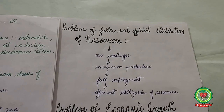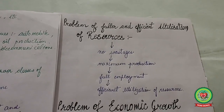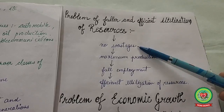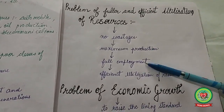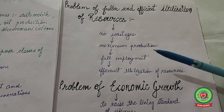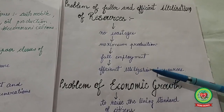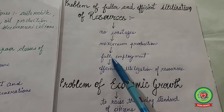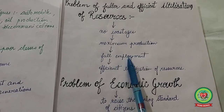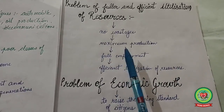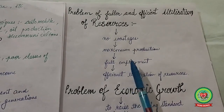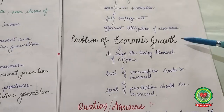The next central problem is fuller and efficient utilization of resources. Resources should be used according to demand with no wastage, leading to maximum production and full employment. Employees should work according to their ability and capacity for efficient utilization. The problem arises from unemployment or underemployment — full employment leads to fuller use of resources.